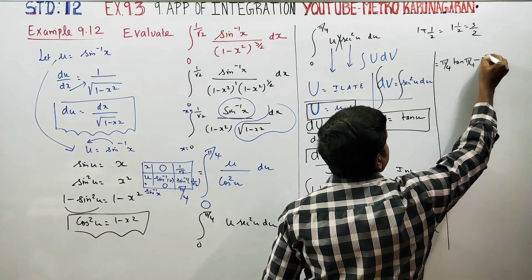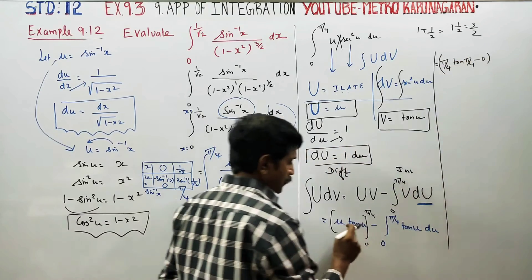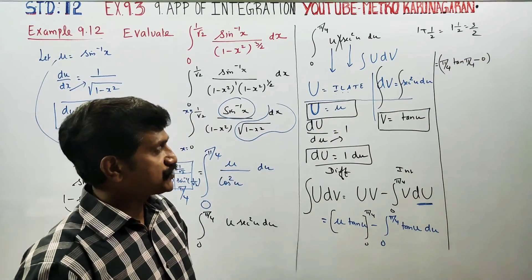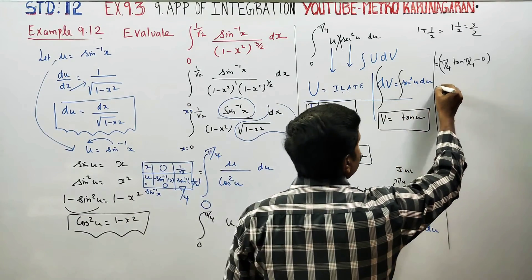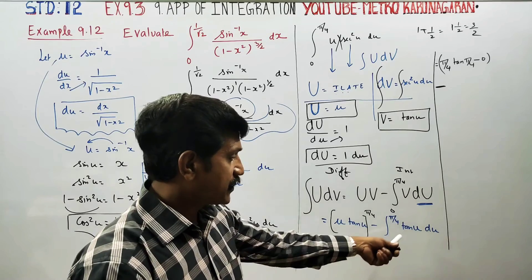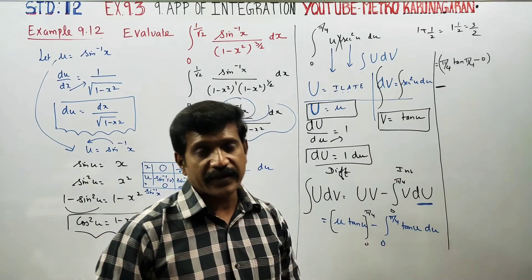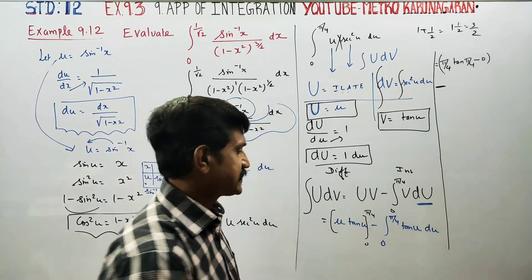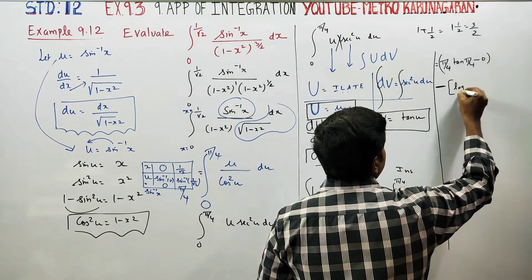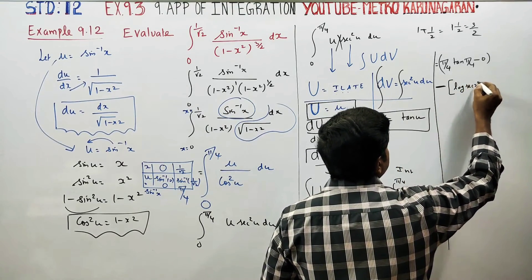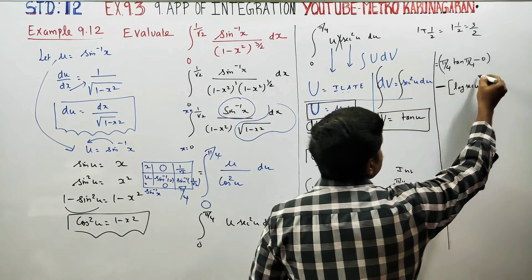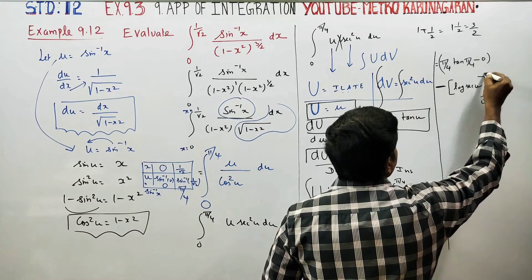At the lower limit 0, the term is zero times anything, which is zero. The integral of tan u is logarithm of secant u. So the expression becomes [u · tan u] from 0 to π/4, minus [log|sec u|] from 0 to π/4.